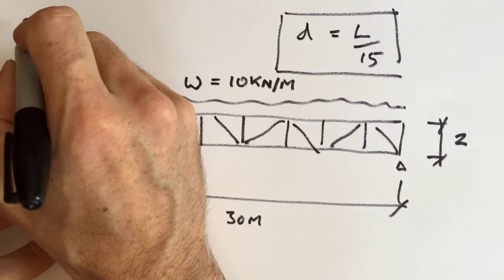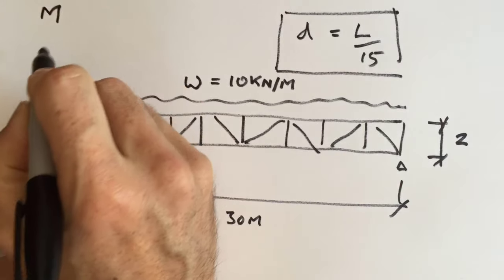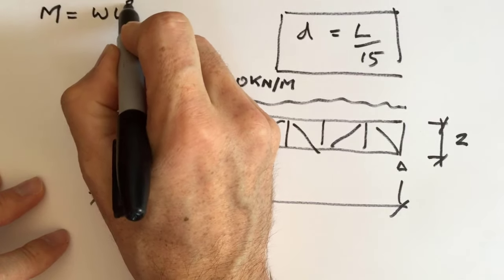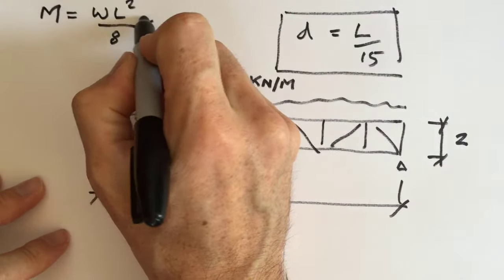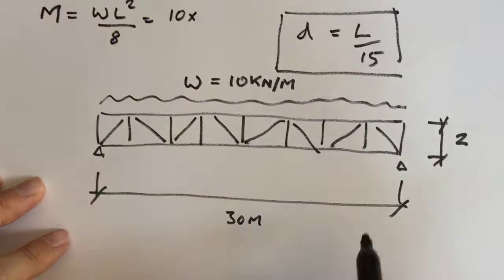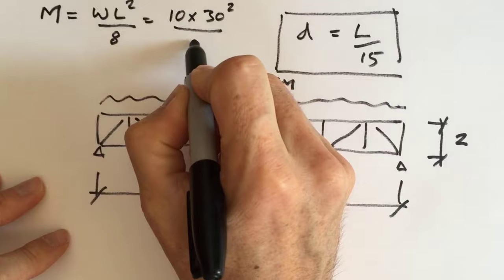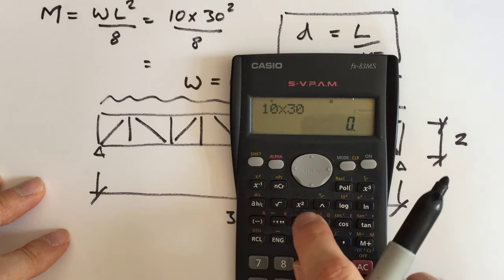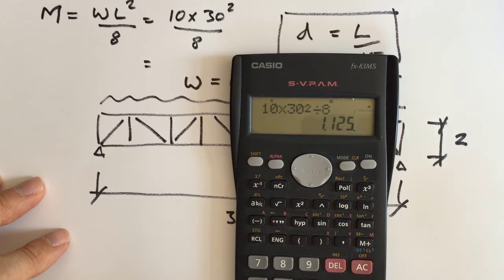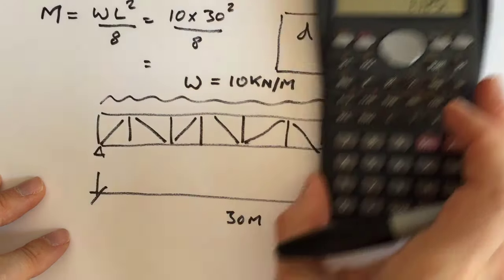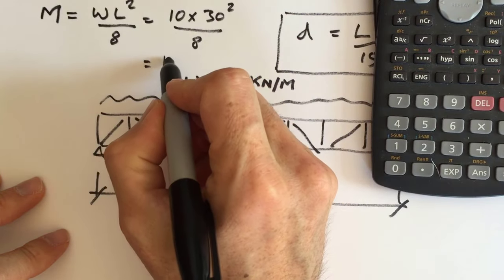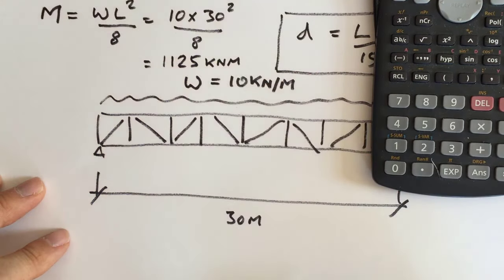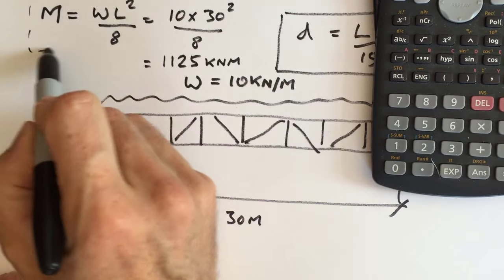So to find out the moment, remember this formula as well, and it's the same as a simply supported beam: M is equal to WL squared over 8. So in our case, we've got 10 times 30 squared divided by 8. So let's get the calculator for that one. 10 times 30 squared divided by 8 equals 1,125 kilonewton metres. So that's the moment. Remember this formula here.